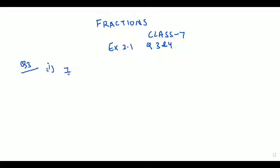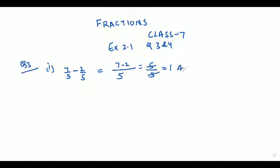In question number 3 we have to subtract the fractions. So 7/5 minus 2/5. As the denominator is already the same, we just subtract 7 minus 2, that is 5/5, and it will get cancelled. The answer is 1.